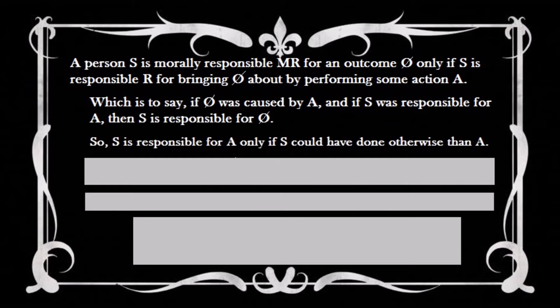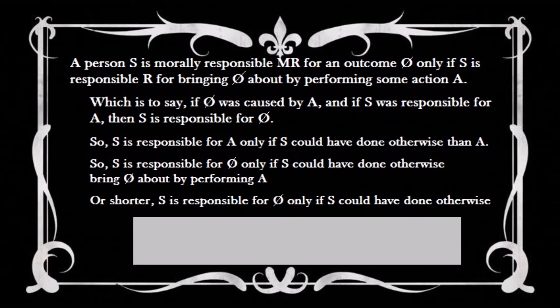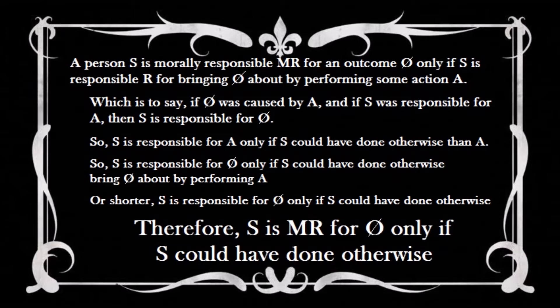This means that you are responsible for an action only if you could have done otherwise and performed that action. It also means that you are responsible for an outcome only if you could have done otherwise to bring that outcome about by performing some action. Or shorter: you are responsible for an outcome only if you could have done otherwise. Therefore, as a principle, you are morally responsible for an outcome only if you could have done otherwise.